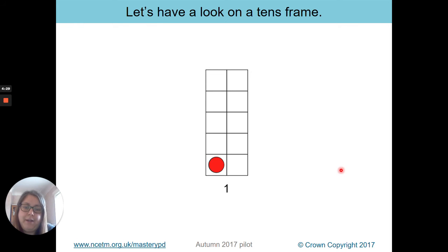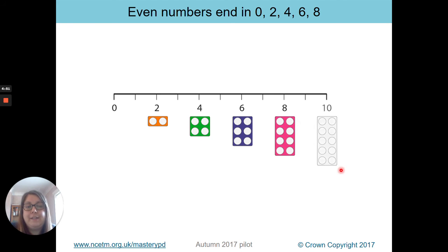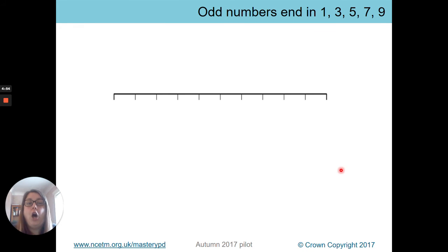So let's have a look on a tens frame then. So if we start with one, two, three, four, can you see how you can see that our pattern is either flat or we get the odd one out as well, don't we, to show our odd and our even numbers. So even numbers end in zero, two, four, six, and eight. And then obviously we say ten because that ends in the zero. Odd numbers end in one, three, five, seven, and nine. And it's just repeating over and over again to remember those numbers.